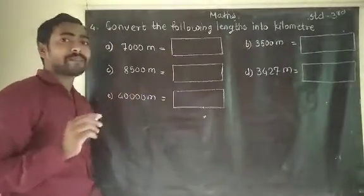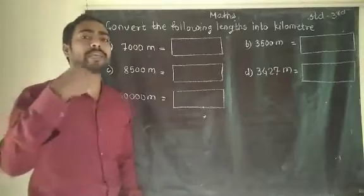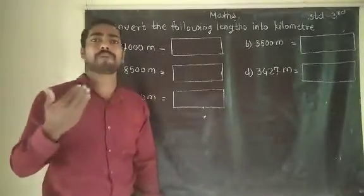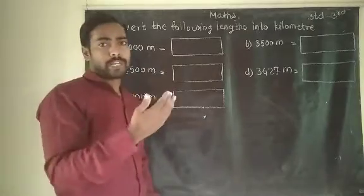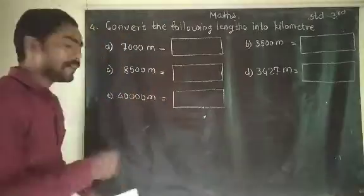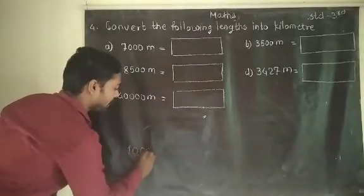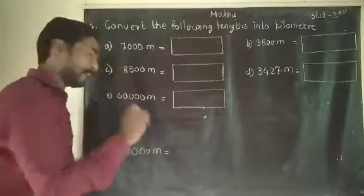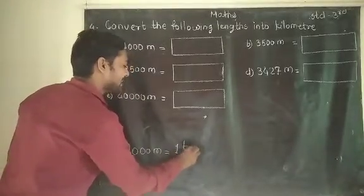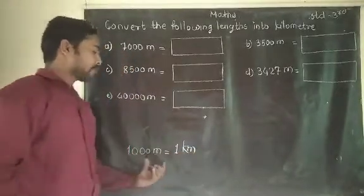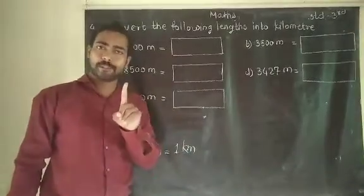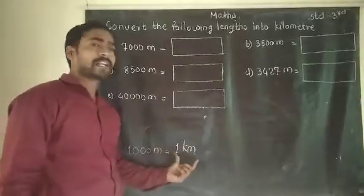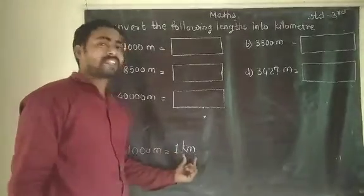Before starting this example, simply: how many meters make a kilometer? 1000 meters means 1 kilometer — 1 km. Remember this: 1000 meter equals 1 km.